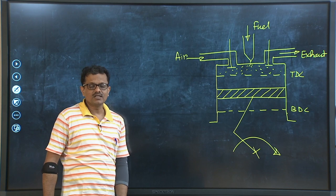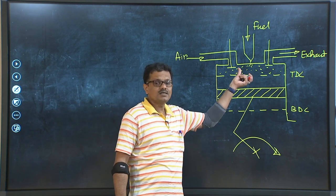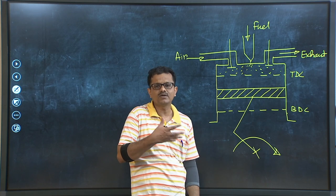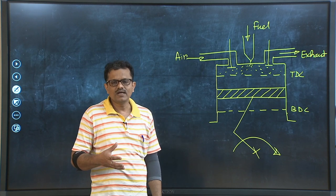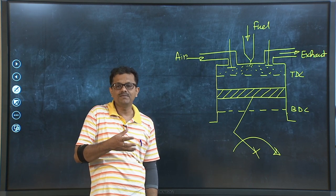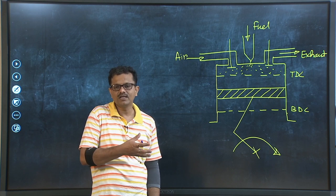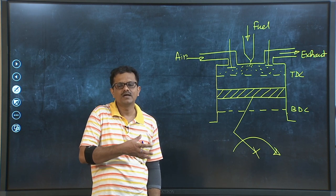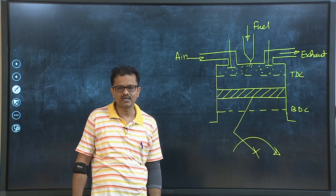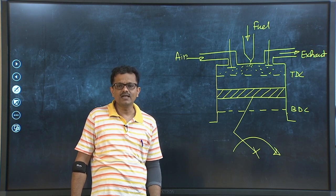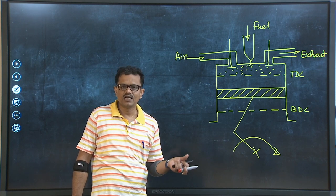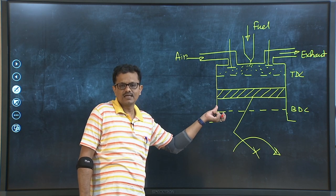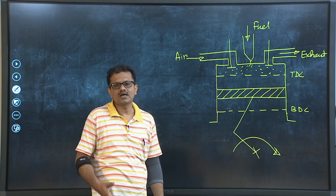One important point: in the context of the Otto cycle we discussed that the combustion process provides a certain amount of heat to the system. When we represented that process in the PV plane, it was a constant volume heat addition — that is what we discussed for the Otto cycle. But can we represent the combustion process by a constant volume heat addition in the PV plane pertaining to the diesel cycle? That is what I would like to discuss.